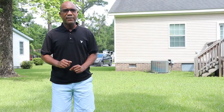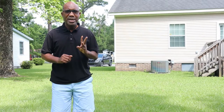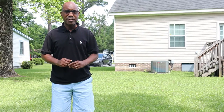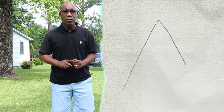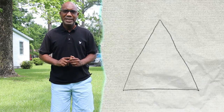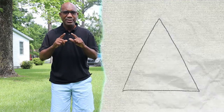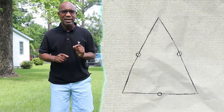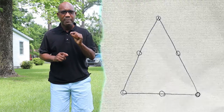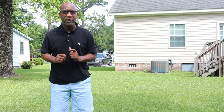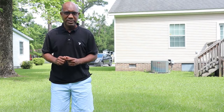We're going to be looking for three shapes. The first shape we're going to look for is a triangle. A triangle has three sides and three points, also called vertices.